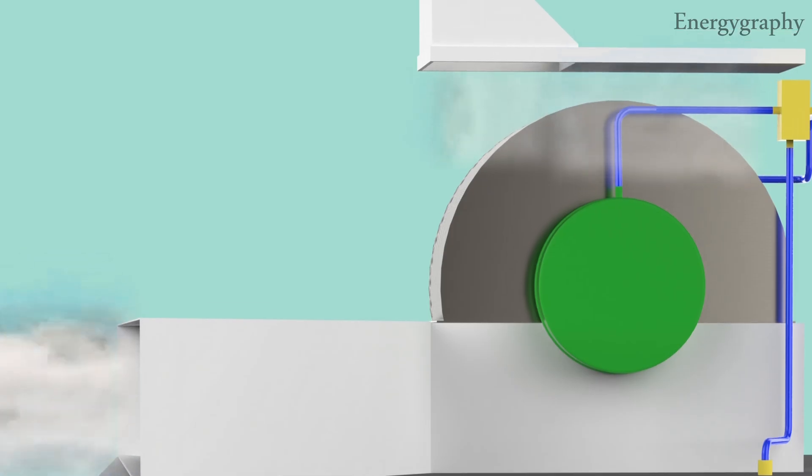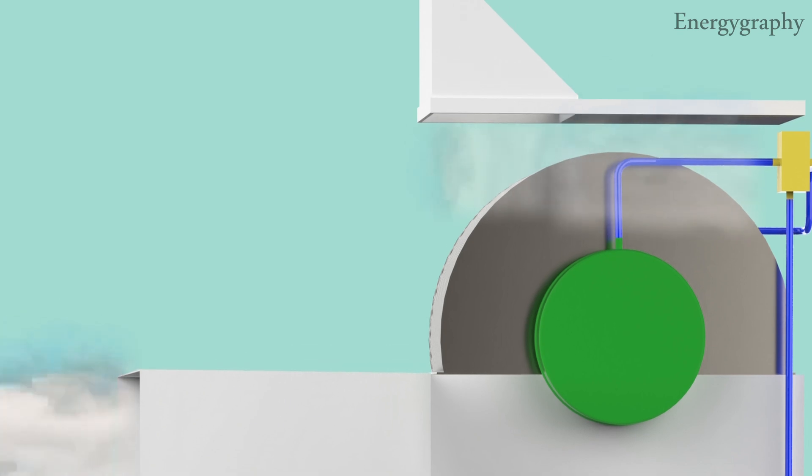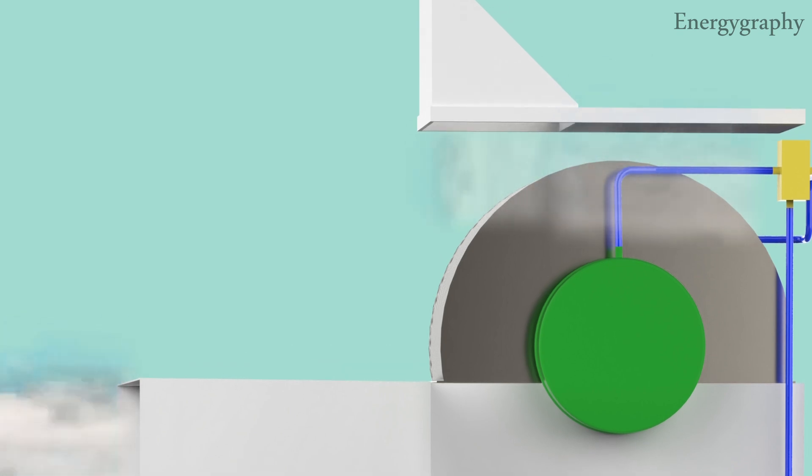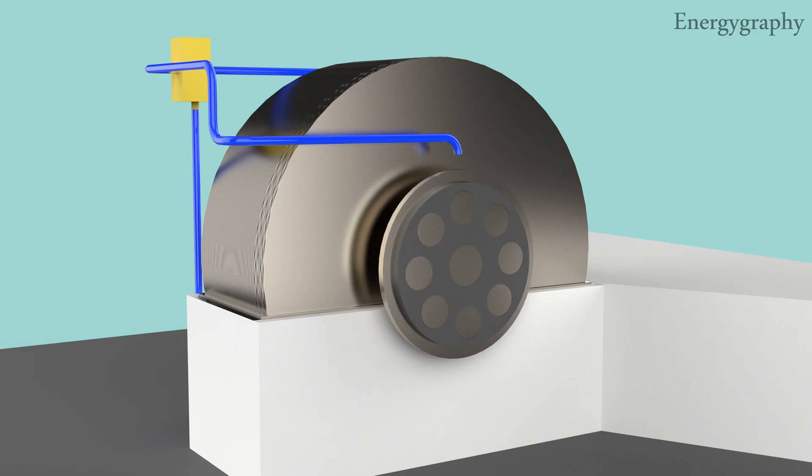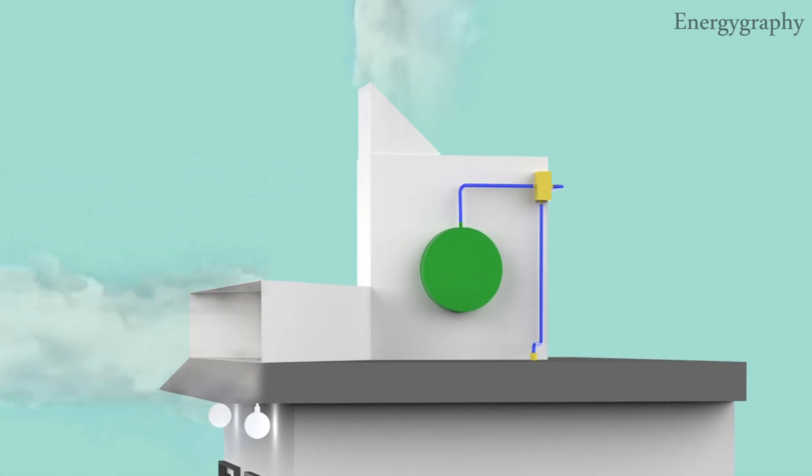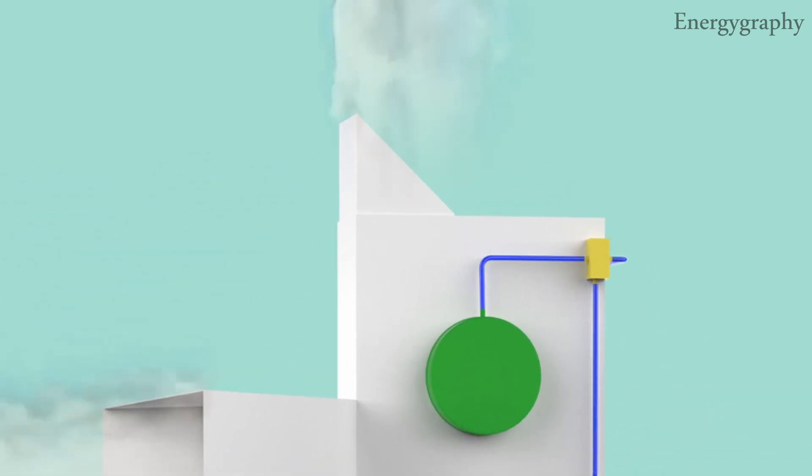The power is transferred through the central shaft to two generators located on both sides of the shaft. The generators start producing electricity, and the air exits from the upper valve of the turbine chamber after complete rotation.